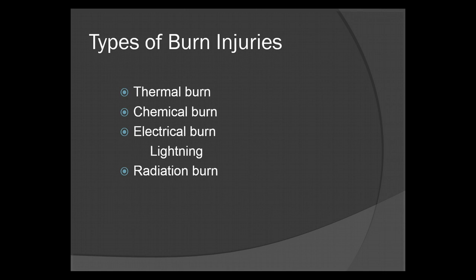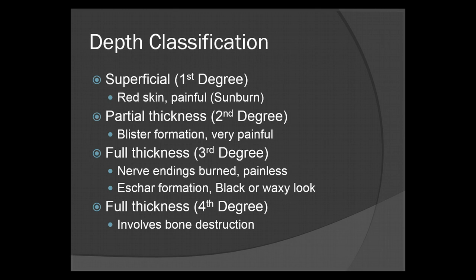We're going to look at depth classifications. First degree, or superficial — most everybody's had one: red and painful. This is your sunburn. Second degree burns are partial thickness. These have blister formations and are very painful — actually the most painful burn, simply because they're much closer to the nerve endings. Third degree is full thickness. These are painless because the nerve endings are actually burned, so they're non-existent.